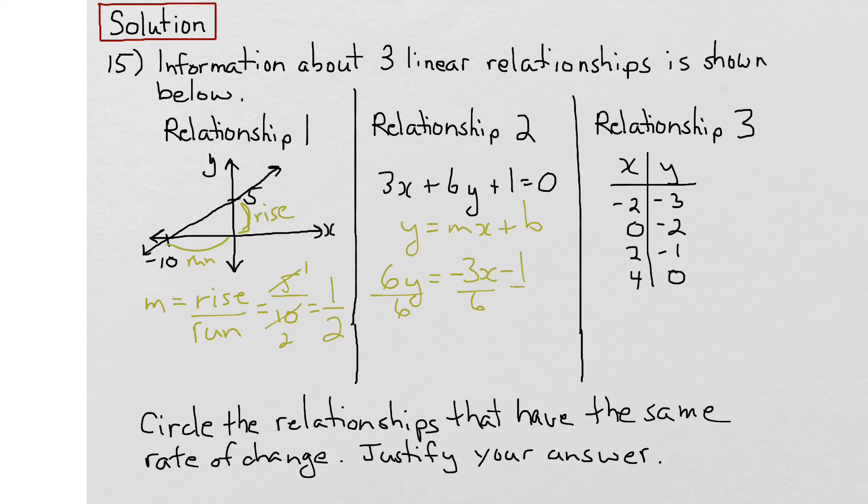And we'd end up with y equals negative 3 sixth x minus 1 sixth.